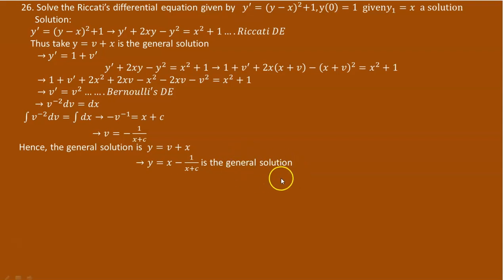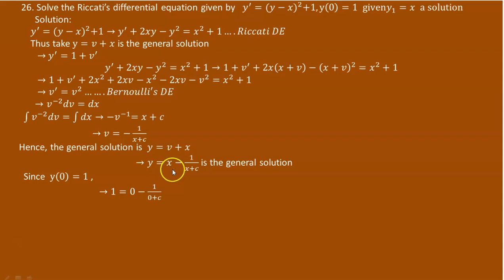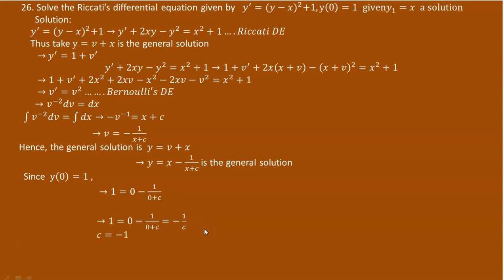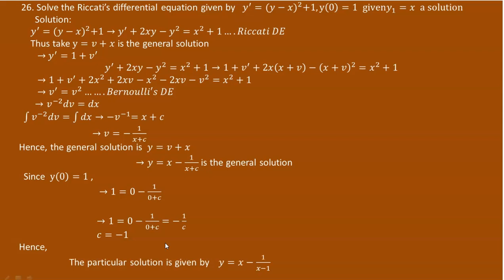But you are not asked to find the general solution — rather, a particular solution is expected because at x equals 0, y has to be 1. So put y equals 1 when x equals 0: 1 equals 0 minus 1 over (0 plus c), which gives 1 equals negative 1 over c. From this, the value of c is minus 1. Substituting c equals minus 1 into the general solution, the particular solution is y equals x minus 1 over (x minus 1). This is the particular solution.